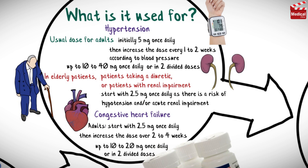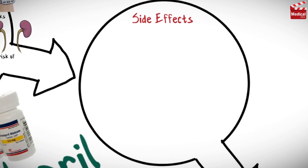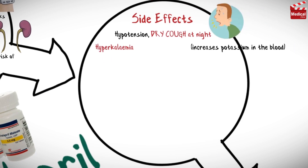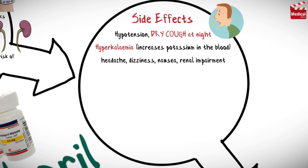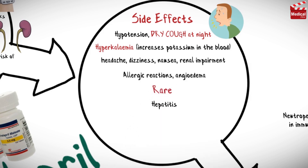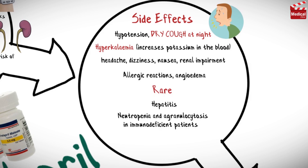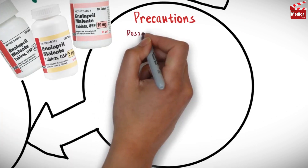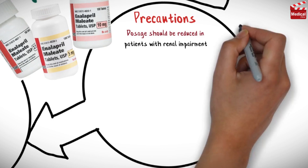Enalapril may cause hypotension, dry cough at night, hyperkalemia (increased potassium in the blood), headache, dizziness, nausea, renal impairment, allergic reactions, and angioedema. It rarely causes hepatitis, agranulocytosis in immunodeficient patients, and anemia in patients with chronic renal impairment. Dosage should be reduced in patients with renal impairment.